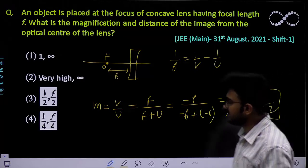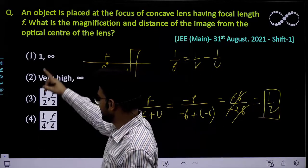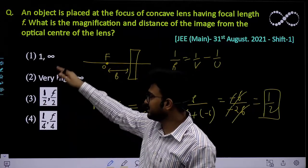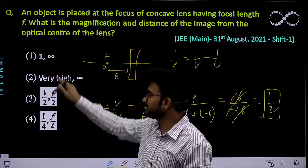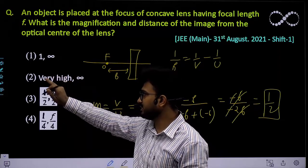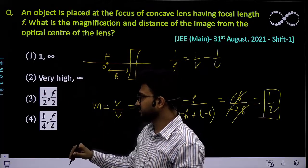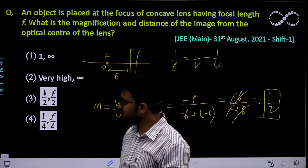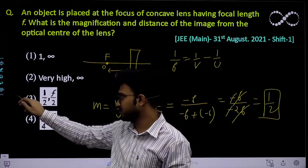This means only one option is correct. Option 1 says magnification is 1, option 2 says very high, option 4 says 1/4. The only correct answer is option 3.